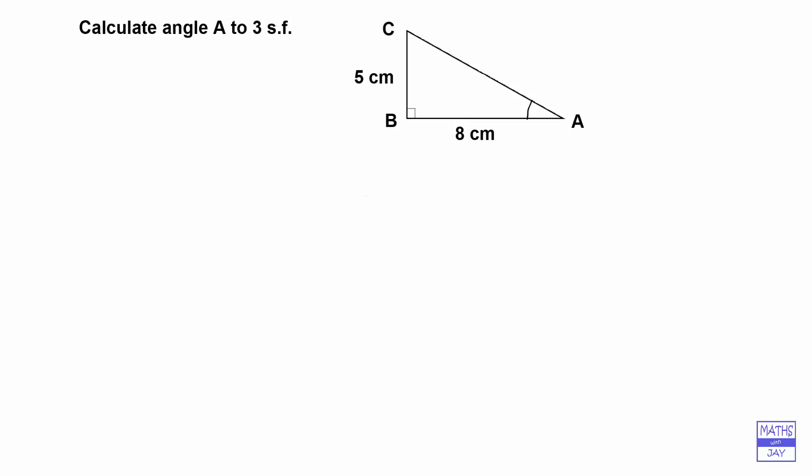When we've got a right-angled triangle and we're given two sides, we know we could find the third side if we use Pythagoras. But in this question we don't need to find the third side, so Pythagoras is not appropriate here.